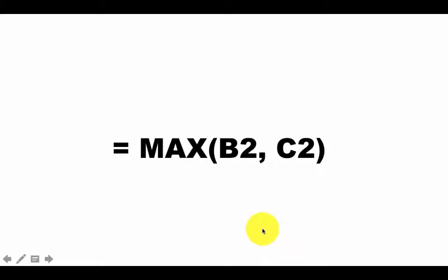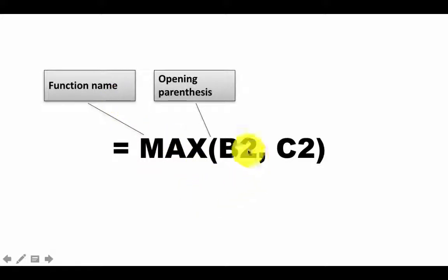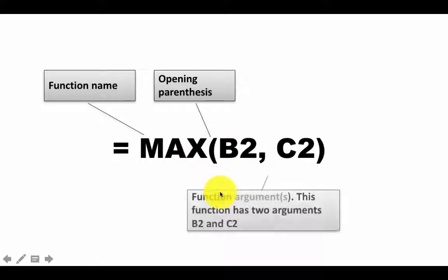So max is the function as I've already pointed out. The way you enter is equals max within parentheses b2, c2. So here max is the name of the function and always when you're using functions you will have the function name followed by an open left parentheses and then you've got several values that you put inside the parentheses and these individual values are separated by commas.